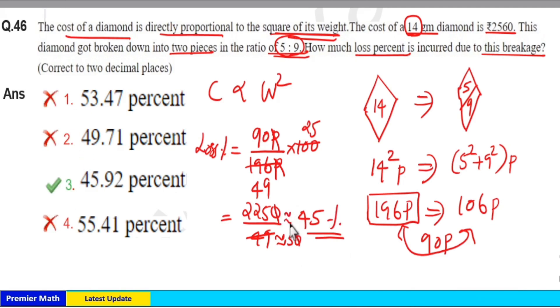Here the concept of part is: cost is directly proportional to weight square, which means cost of ₹2560 is directly proportional to 14 square. Weight is 14 square.